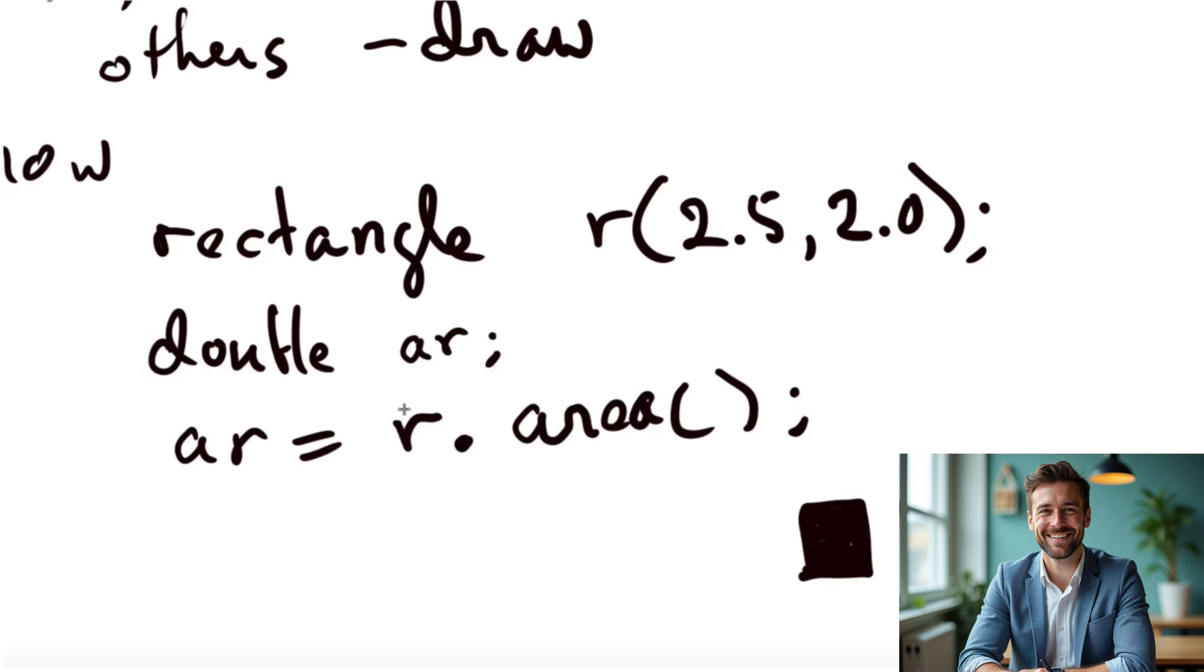And now what happens is on this rectangle, don't forget R is a rectangle, area is computed. And secretly area is this thing with a height and a width of 2.5 times 2. So this AR should end up with the double value 5.